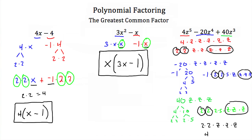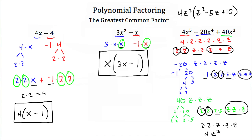Our greatest common factor is 2 times 2 times z times z times z, which is 4z cubed. So we factor out 4z cubed. From the first term we're left with two z's, or z squared. From the second term we're left with negative 1 times 5 times z, or minus 5z. From the third term we're left with 2 times 5, or 10. So the factored form of 4z to the fifth minus 20z to the fourth plus 40z cubed is 4z cubed times z squared minus 5z plus 10.